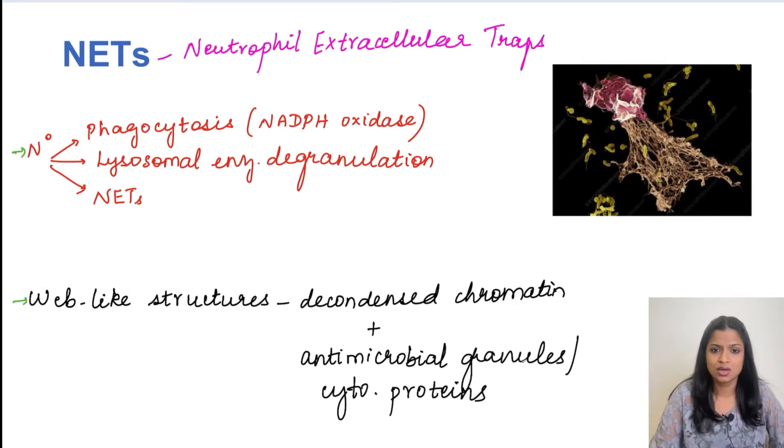So what are these neutrophil extracellular traps? These are nothing but extruded DNA material along with the cytoplasmic and the granular content of the neutrophil into the extracellular environment. So basically the DNA content, that is the chromatin of the neutrophil, is going to be extruded into the extracellular environment and it is going to concentrate the cytoplasmic proteins and enzymatic granules of the neutrophils.